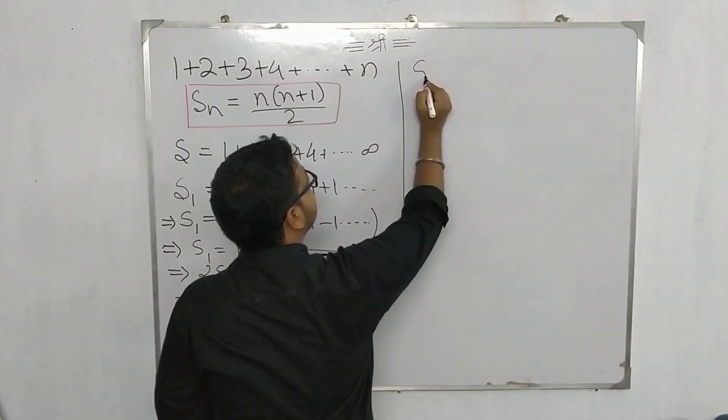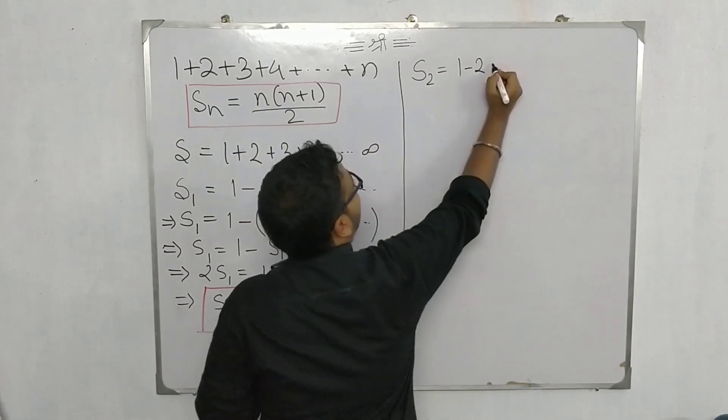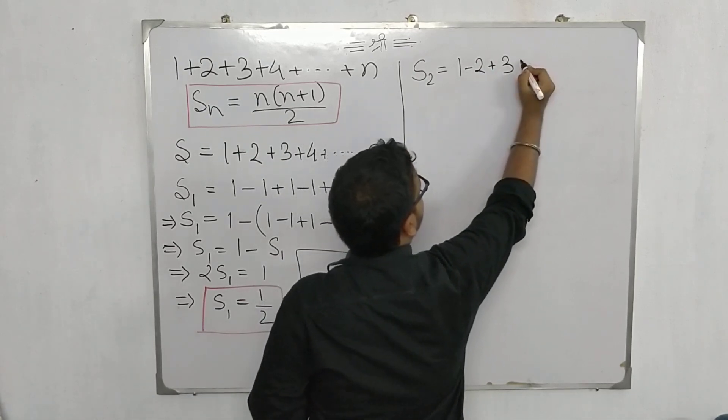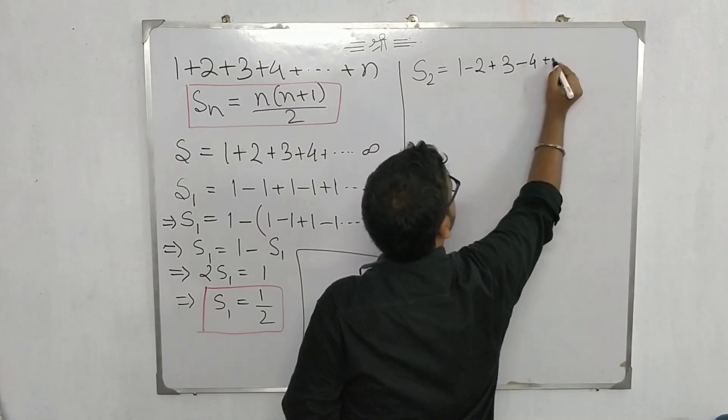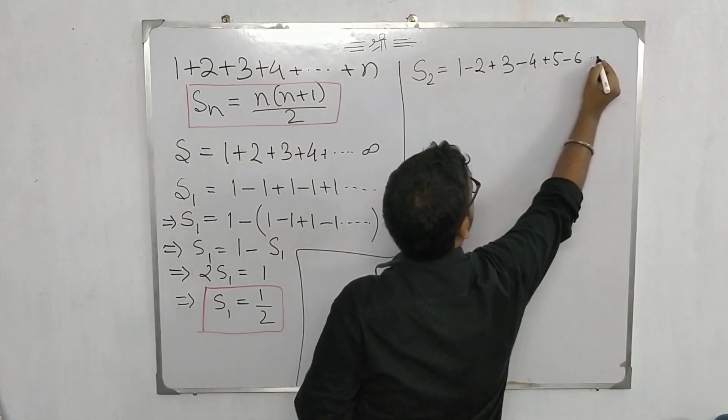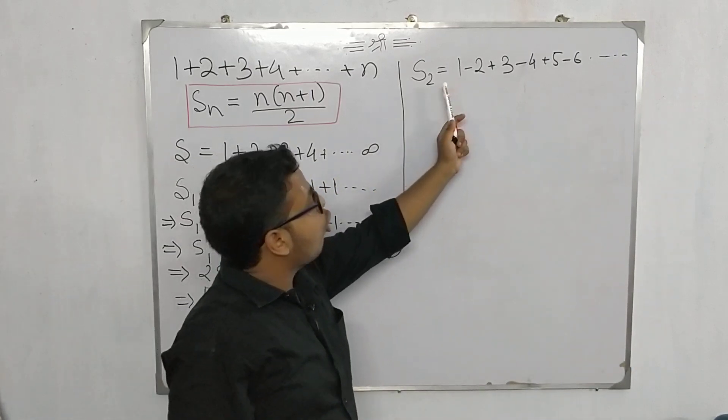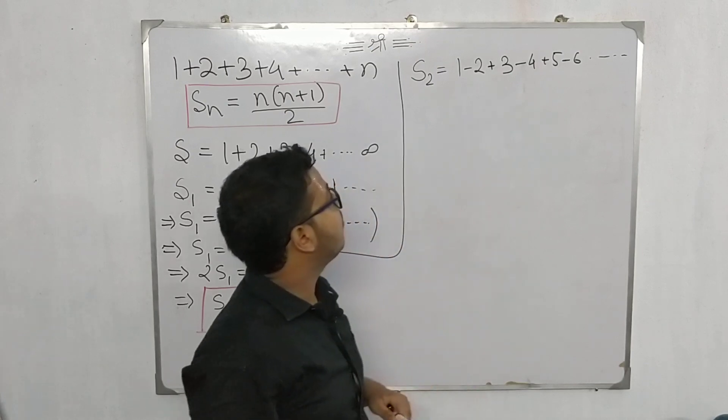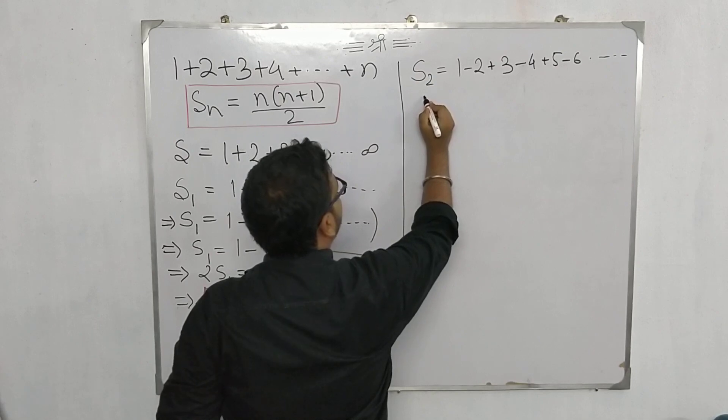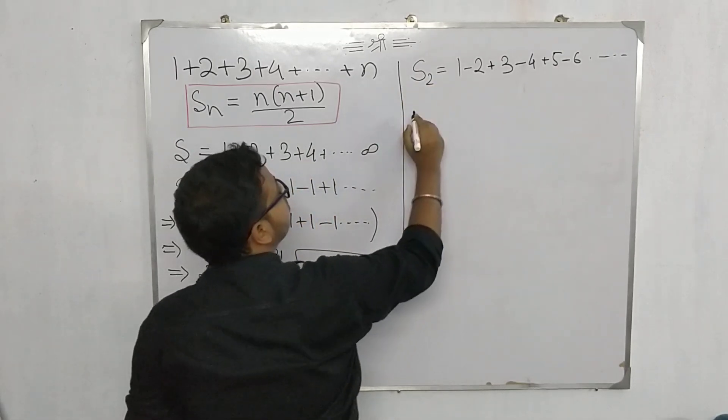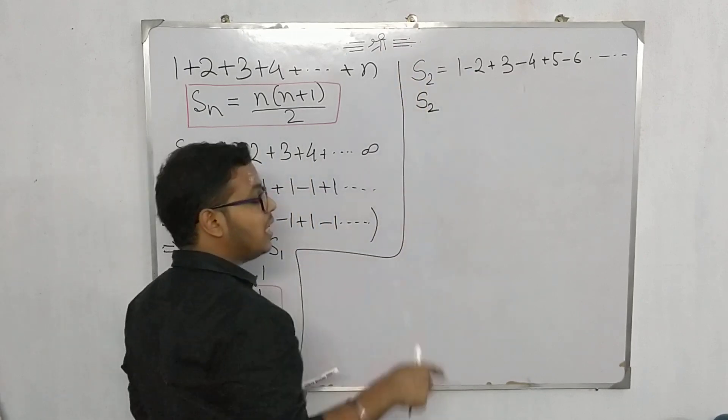Let's take another series s₂. I'm naming it s₂. It is like 1-2+3-4+5-6 and so on. So this is another series that we have taken in which all the odd terms you can see are positive but even terms are negative. So for calculating the value of s₂, what we will do is we will add s₂ again to s₂, but we will shift the whole series by one term.